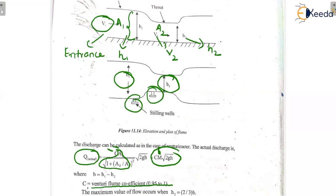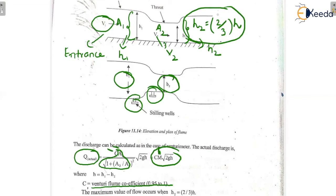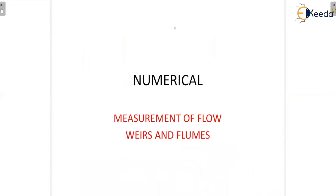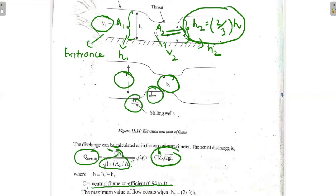The maximum flow occurs when H2 equals two-thirds of the total height H. That is, H2 = (2/3) × H. Only when this condition is met does maximum flow of liquid occur. With that, we have completed the topic. Next, we are going for a numerical problem which will be explained in a different manner.